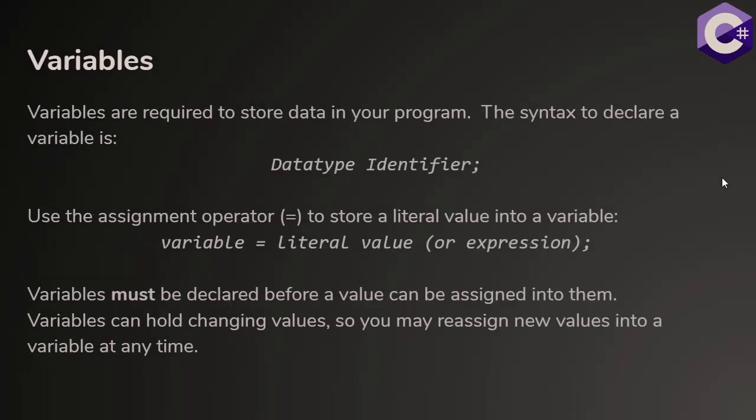Let's talk about variables. Variables hold a value. They're storage locations like a box. To create a variable or declare a variable, the syntax is we pair a data type with an identifier. If I want to assign a value into this variable, we use the assignment operator, which is an equal sign. We have a literal value or expression on the right-hand side. We have our variable on the left-hand side. And this syntax stores the value on the right into the variable on the left.